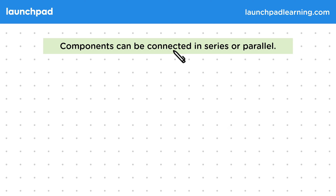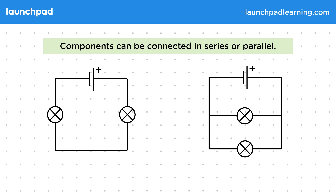Components can be connected in series or parallel. When we say components are connected in series, they are part of the same branch of a circuit, or any path around the circuit goes through both or neither of the components. So here, since there's only one path around the circuit, both lamps must be in series.